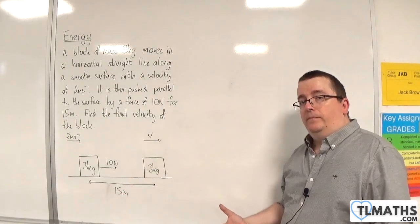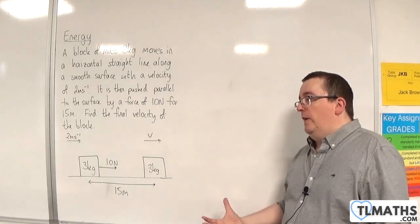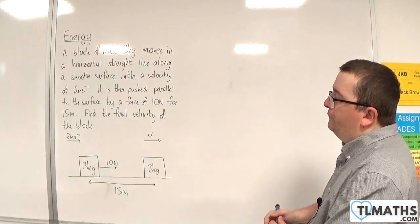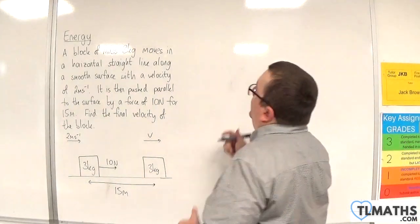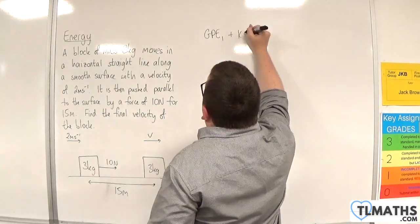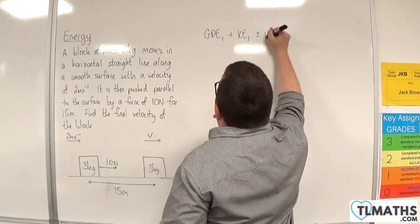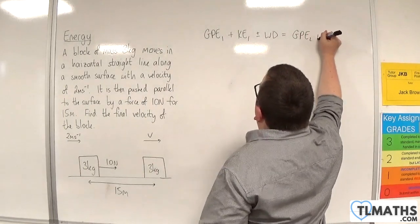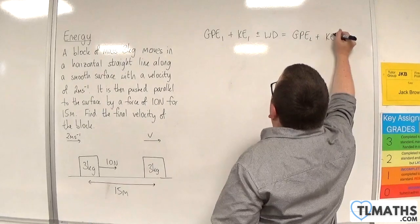But we're going to use an energy method. And remember, the questions that we face will tell us to use an energy method. And we'll be expected to use that. So we have the initial gravitational potential energy plus the initial kinetic energy plus or minus the work done is equal to the final gravitational potential energy plus the final kinetic energy.